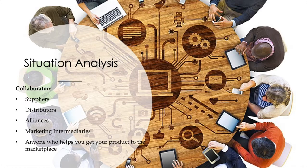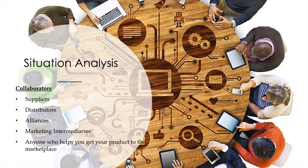We also have collaborators — suppliers. If I have many suppliers, I can get my product quickly or the materials I need to perform my service. Who's going to distribute it, and what alliances do we have? Sometimes a competitor can be a collaborator too, because you may be selling different products and not going head-to-head. Marketing intermediaries — consultants, anyone who can help get that product or service to the customer and to the marketplace.